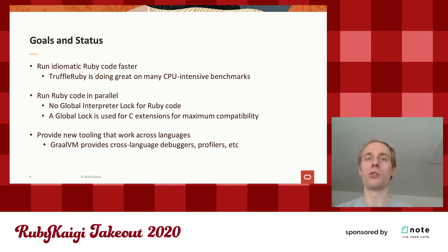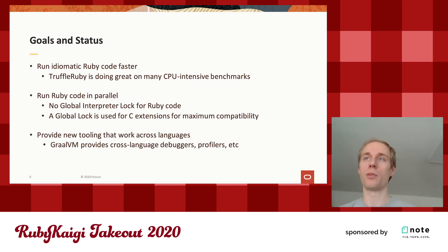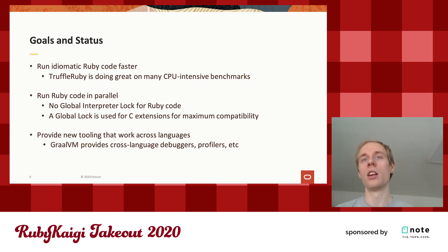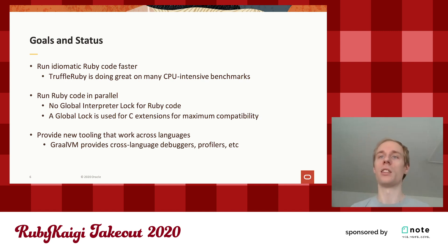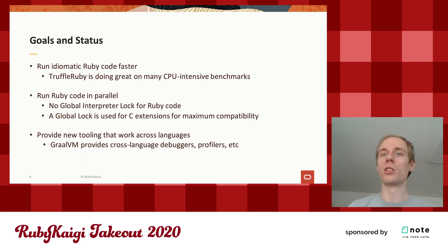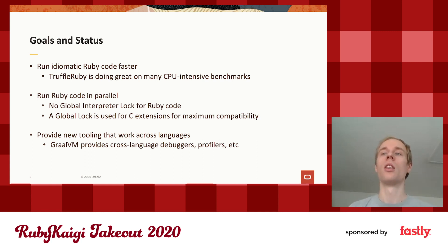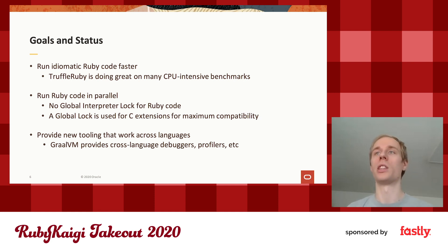TruffleRuby wants to run your Ruby code in parallel and doesn't have a global interpreter lock, so that works great. But for C extensions, the situation is a bit more complicated. Because some C extensions expect to run all their C code under a single lock, we actually have a global lock enabled by default for maximum compatibility.